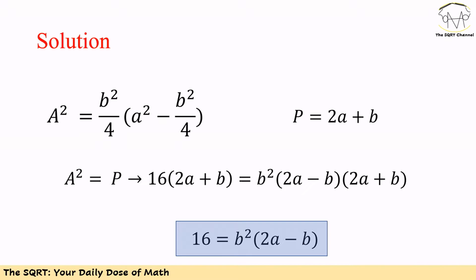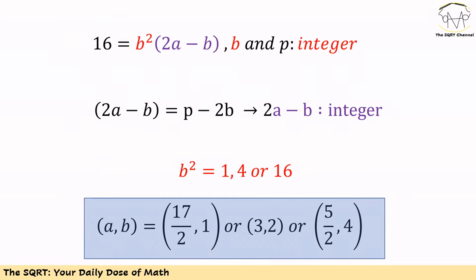Remember b and P are integer numbers. Since b is an integer, b squared is also an integer. What about 2a minus b? We can write 2a minus b as P minus 2b. Since P and b are integer numbers, then 2a minus b should be an integer as well. So in the equation 16 is equal to b squared times 2a minus b.